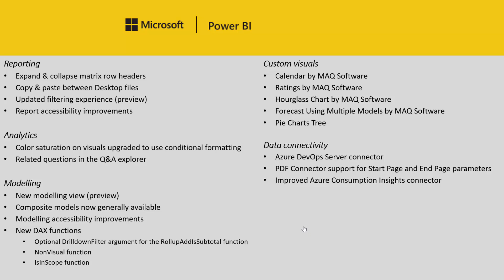With making this feature generally available, we're also adding one more change: we now allow relationships between different sources to have a cardinality of many-to-one, to reflect the actual cardinality of the data. While the relationships may still have the same weak behavior as many-to-many relationships, allowing the true cardinality to be defined allows additional optimizations and also just a cleaner model. Continuing on accessibility improvements, we also have some modeling related accessibility improvements.